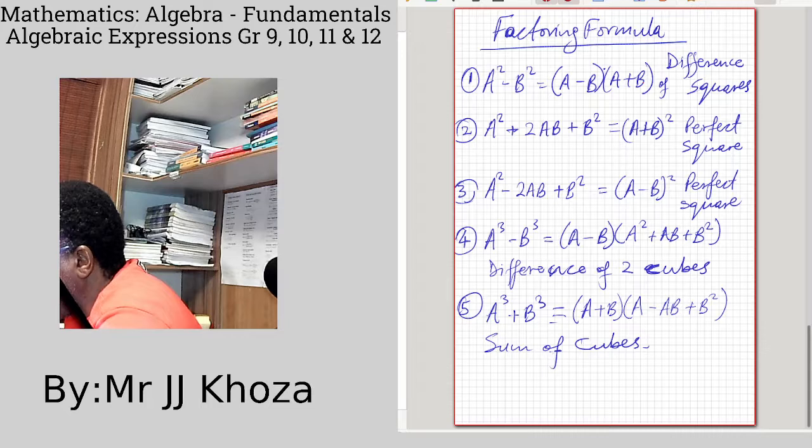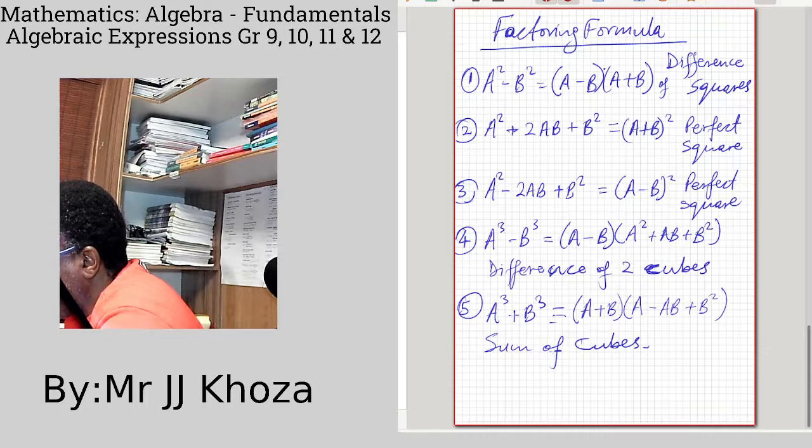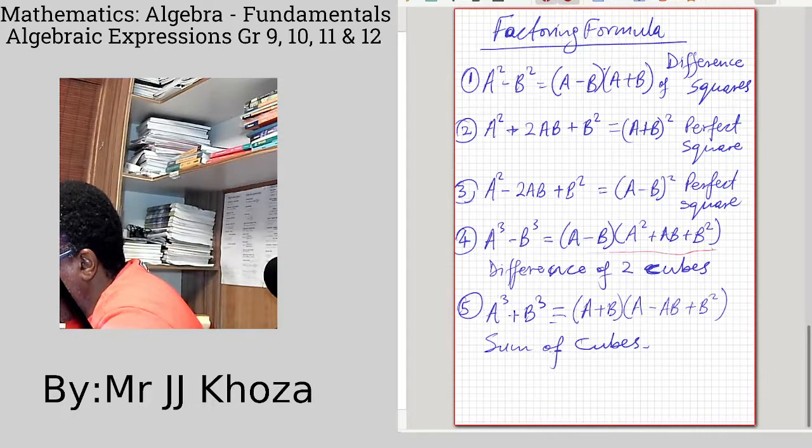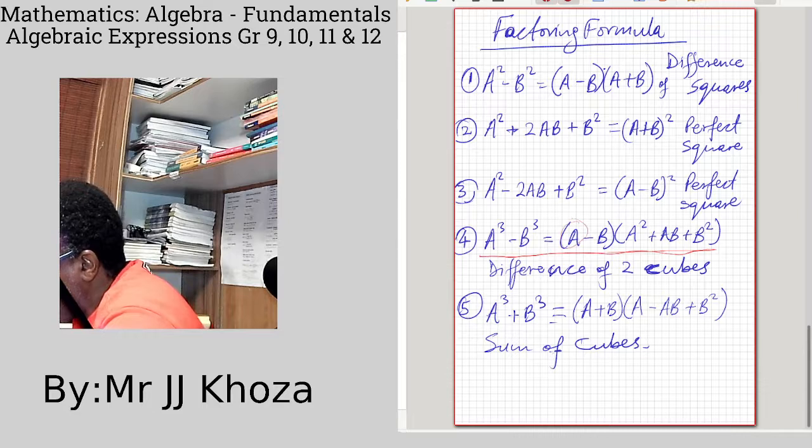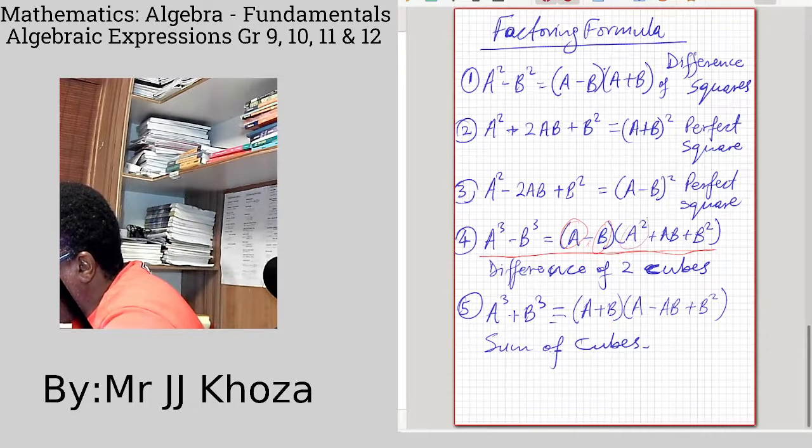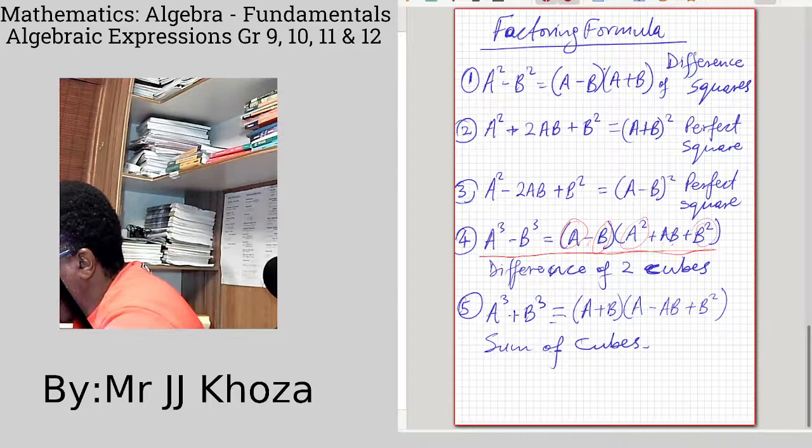Here is a perfect square, and here is another perfect square. We also have a difference of cubes. This is just a standard formula. Here you take a cube of a, you get a cubed. You take a cube of b, you get b cubed. You bring back the sign, and then you say a multiplied by a, you get a squared. You say a multiplied by b, you get ab. And then you say b multiplied by b, you get b squared. Simple and straightforward.